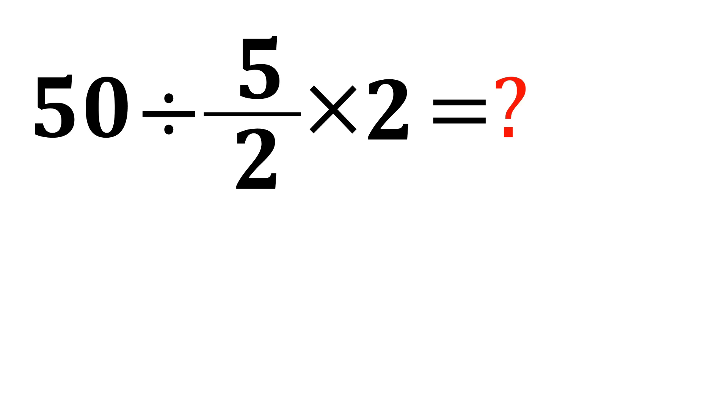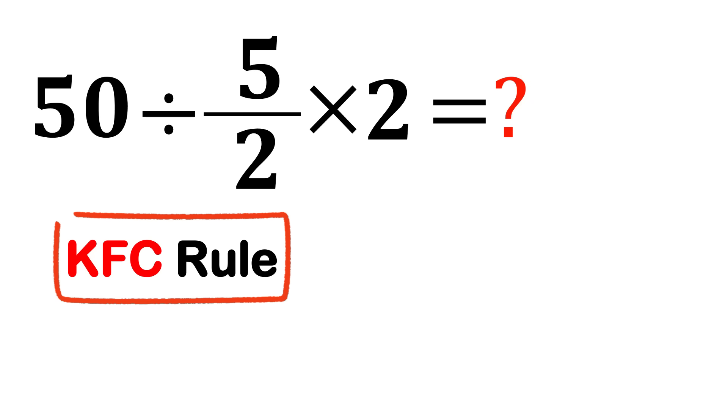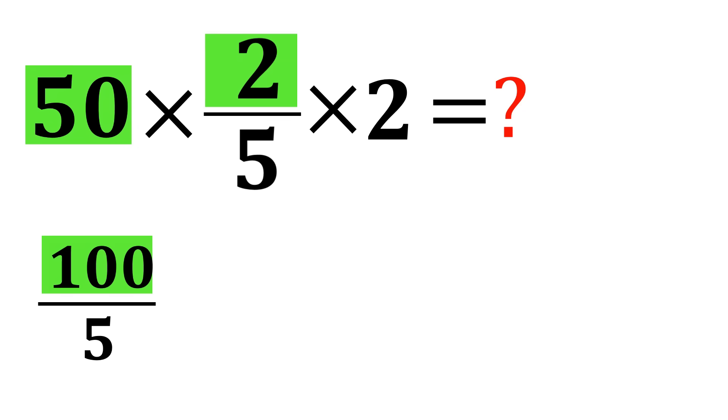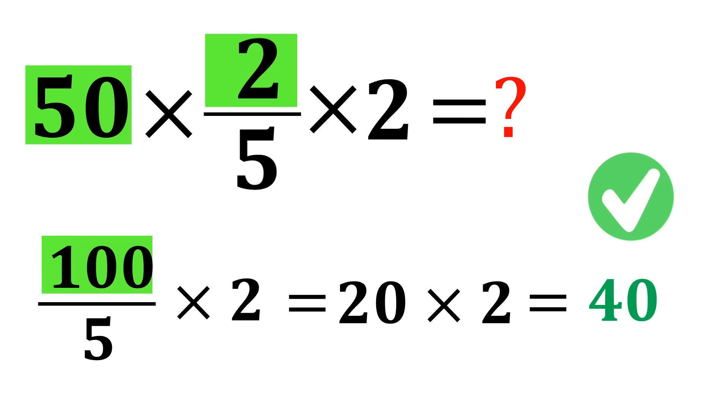We use the KFC rule: we keep 50, we flip 5/2 to 2/5, and we change division to multiplication. Now we solve this from left to right: 50 multiplied by 2 is 100, 100 divided by 5 is 20, and 20 multiplied by 2 equals 40. And that's it—the correct answer is 40.